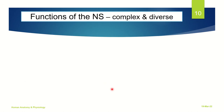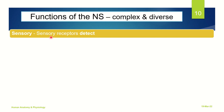Now let's understand the functions of the nervous system. As we have already discussed, it is a highly complex and diverse system. It has three important functions. Number one is sensory: with the help of sensory receptors, it can detect internal as well as external stimuli. For example, internal stimuli could be an increase in the levels of acid in the blood,